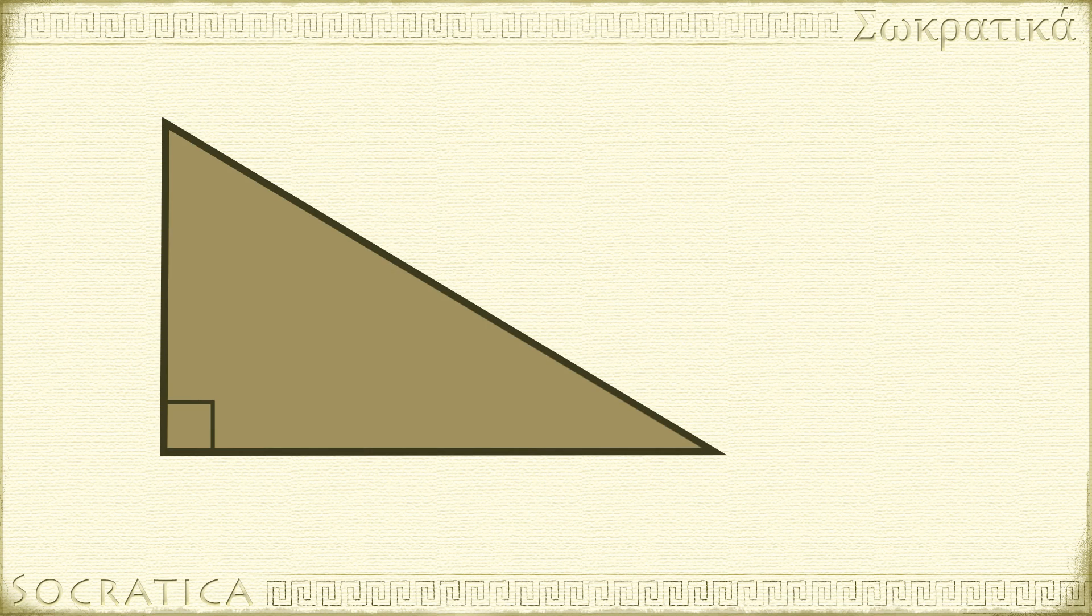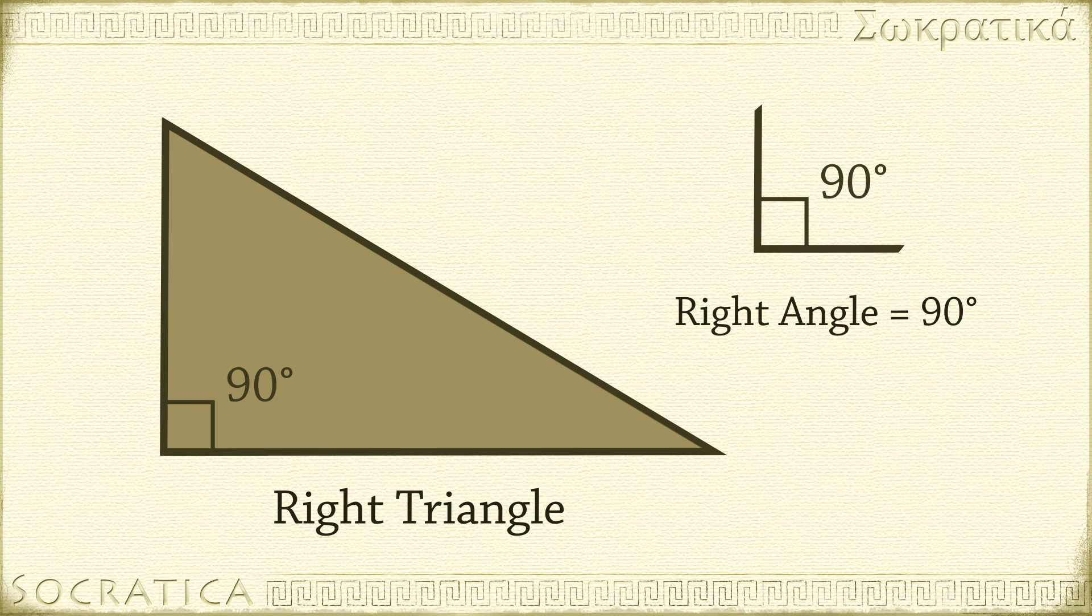If one of the angles is exactly 90 degrees, we call it a right triangle. This is because the triangle sits upright. The 90 degree angle is called a right angle, and you indicate this with a small square.